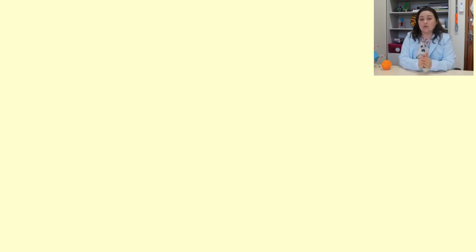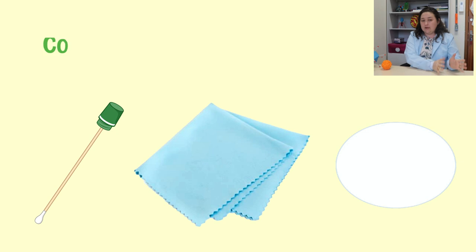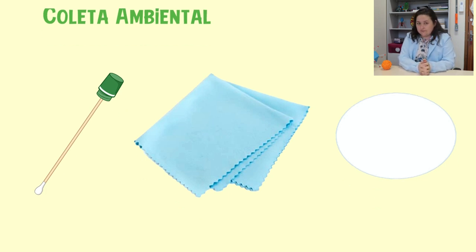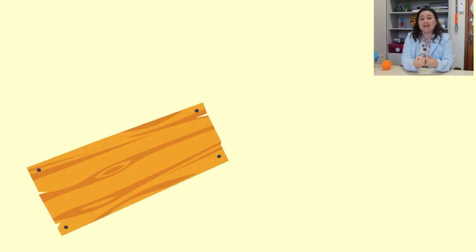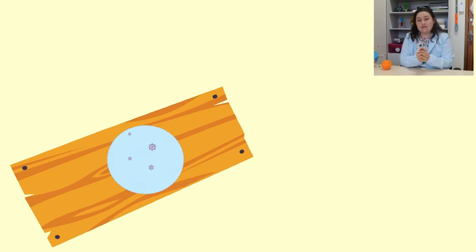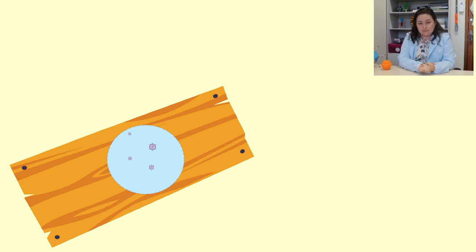Para analisar os vírus em superfícies, precisamos primeiro recuperar o vírus do ambiente. O primeiro passo é atrair a partícula viral para suabes, toalhas ou filtros especiais — o passo que chamamos de coleta ambiental. Os materiais comumente utilizados são feitos de fibra de vidro, bastão de poliéster, malha antiestática e outros filtros mais elaborados que costumam apresentar maior recuperação viral a partir de ambientes. Especificamente de superfícies, pode-se utilizar um tampão — um líquido — aplicado diretamente na superfície para melhorar a recuperação desses vírus.